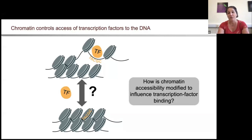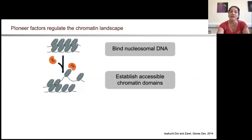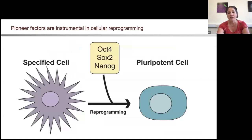A really powerful framework for understanding this is the concept of pioneer factors. These are specialized transcription factors that have the capacity to bind to their sequences even when they're wrapped up in nucleosomes. They can establish accessible chromatin domains and facilitate the binding of additional transcription factors. Proteins with these characteristics are really important in driving developmental transitions, highlighted by the fact that three of the four key Yamanaka reprogramming factors have these pioneer factor characteristics.